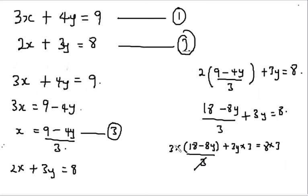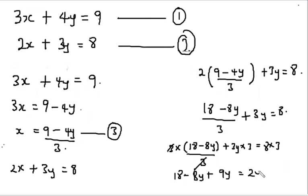The 3s cancel out, giving 18 minus 8y plus 9y is equal to 24. Simplifying: 18 plus y is equal to 24.